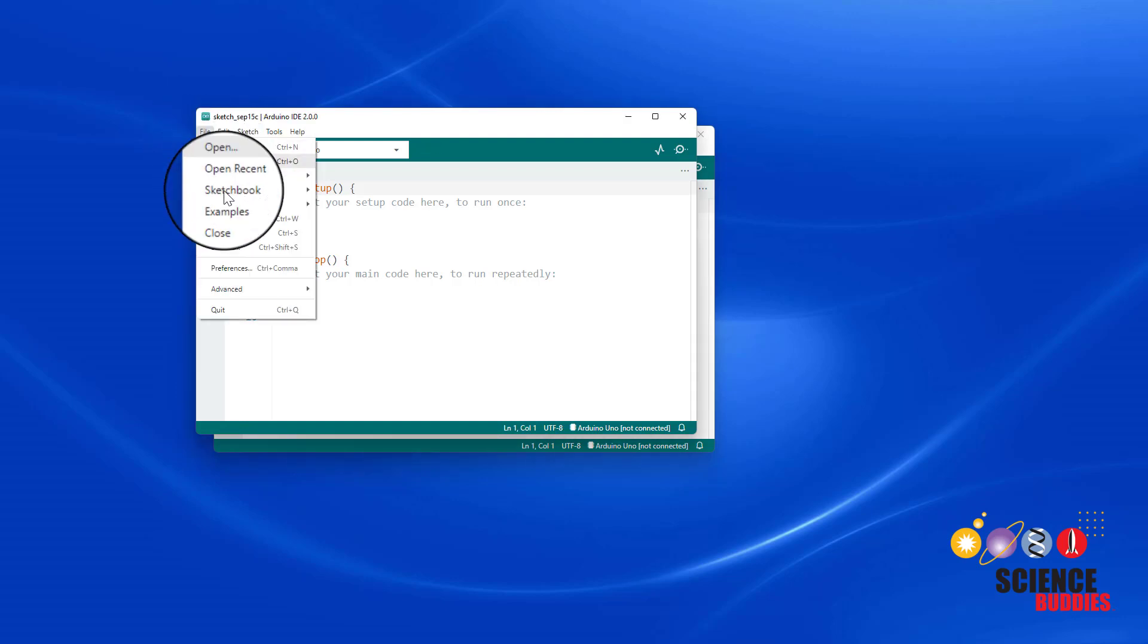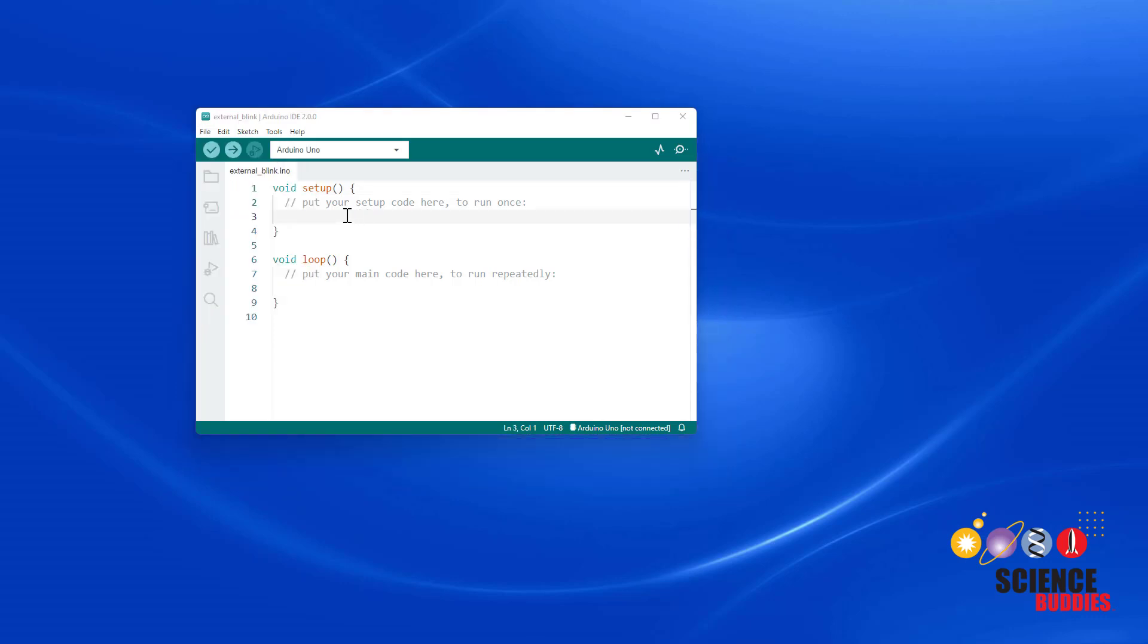You can select File Save to save your program on your computer. Make sure you give it a name that makes sense to you and save it in a place where you'll easily be able to find it again. This time, instead of loading an example program, you'll write your own code. Follow along as I type and pause the video if you need time to catch up on the typing.